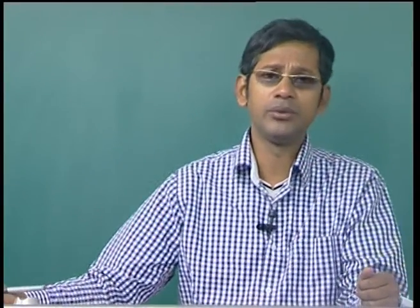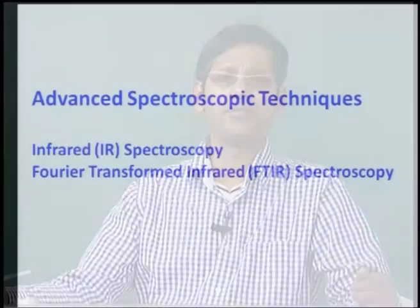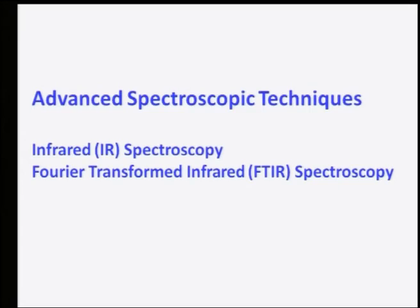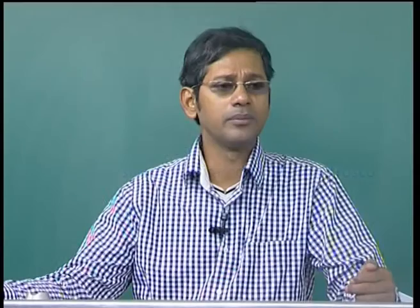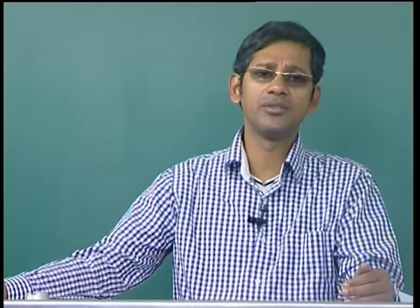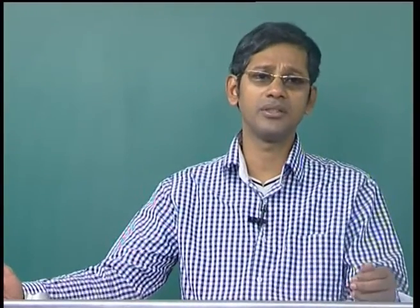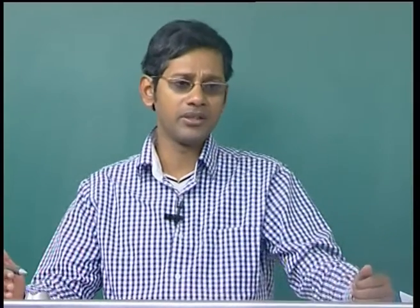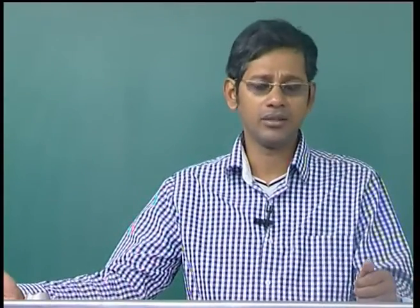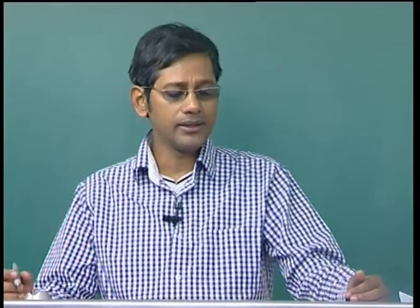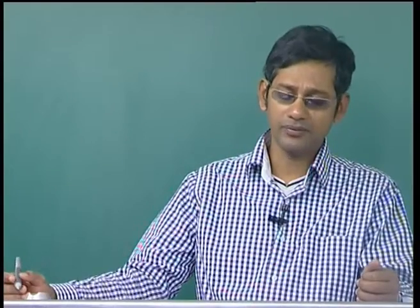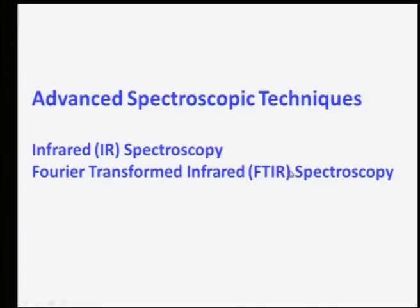Today we are going to discuss a new spectroscopic technique called infrared spectroscopy. Infrared spectroscopy is part of the advanced chemical spectroscopic techniques used to determine different kinds of chemical information, starting from electronic transitions to vibrational spectroscopy to even nuclear transitions. This technique is normally used in machines as Fourier Transform Infrared Spectroscopy, or FTIR, which is widely used in research labs.